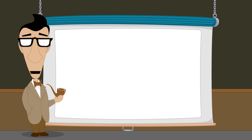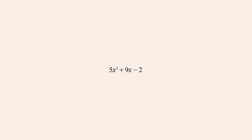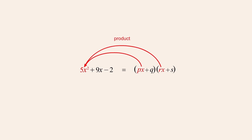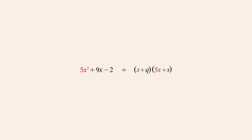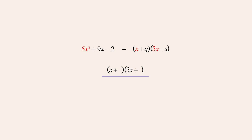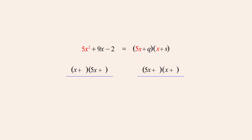As our first example, let's factor the quadratic expression 5x-squared plus 9x minus 2. We start by listing all the possible pairs of linear factors whose product of x-terms is 5x-squared and product of constant terms is negative 2. One choice for x-terms whose product is 5x-squared is x and 5x. Making another table with x-terms of 5x and x is not necessary, since this would just produce the same pairs of factors with their order swapped.